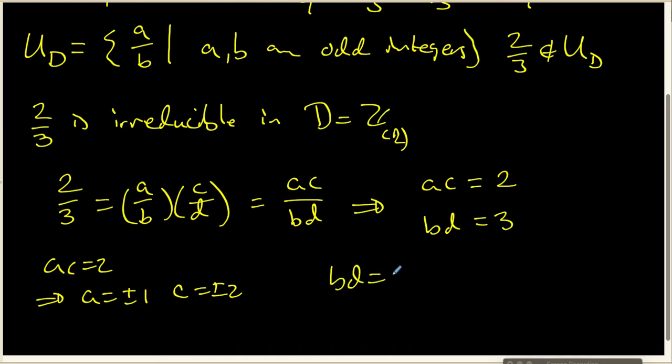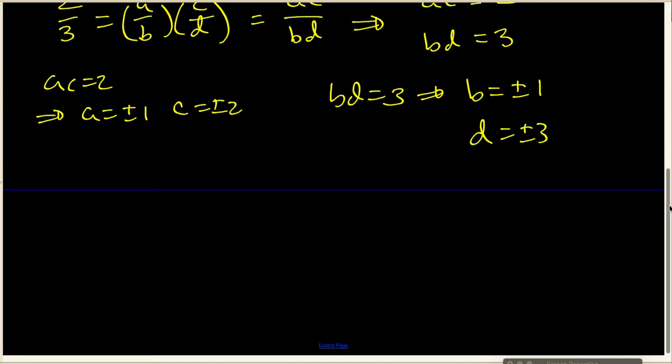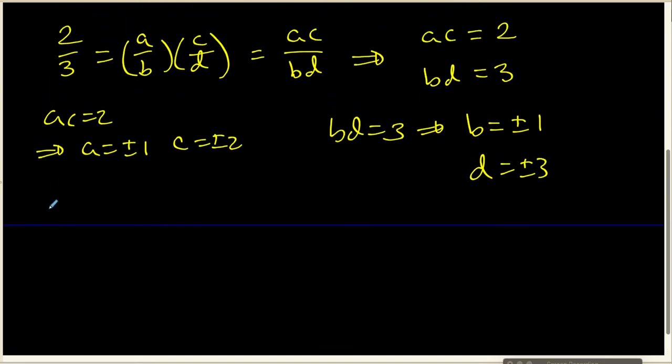BD being equal to 3 is going to tell me that one of them is going to be plus or minus 1, and the other one is going to be plus or minus 3. Well, the upshot of this is that there are not very many lowest term fractions that we can use as this product.